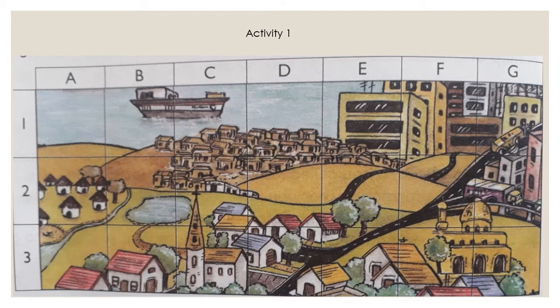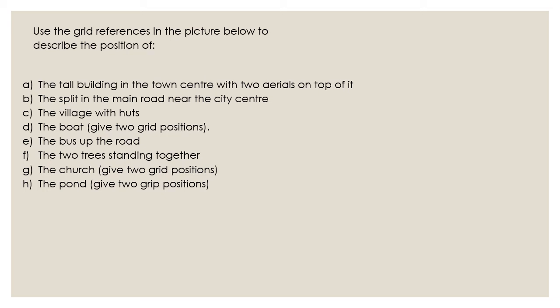Now let's look at our activity. We have a picture of a city and a village. We must use the grid references in the picture to describe the position of: A — the tall building in the city centre with two areas on top of it; B — the split in the main road near the city centre; C — the village with hearts; D — the boat, giving two grid positions; E — the bus up the road; F — the two trees standing together; G — the church, with two grid positions; and H — the pond, also with two grid positions. I will only be doing number A with you, and the rest you will do during the week.